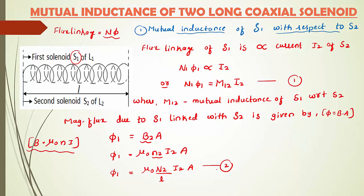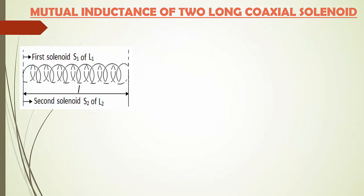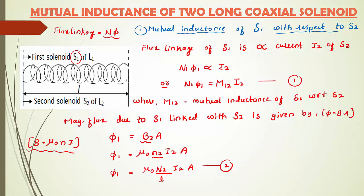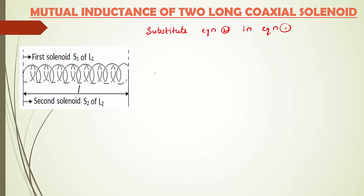Equation 1 is the flux linkage of S1 with respect to S2, and equation 2 is the magnetic flux due to S1 linked with S2. Now we substitute equation 2 into equation 1. Equation 1 is N1φ1 = M12 × I2, so we can write M12 = N1φ1 / I2.